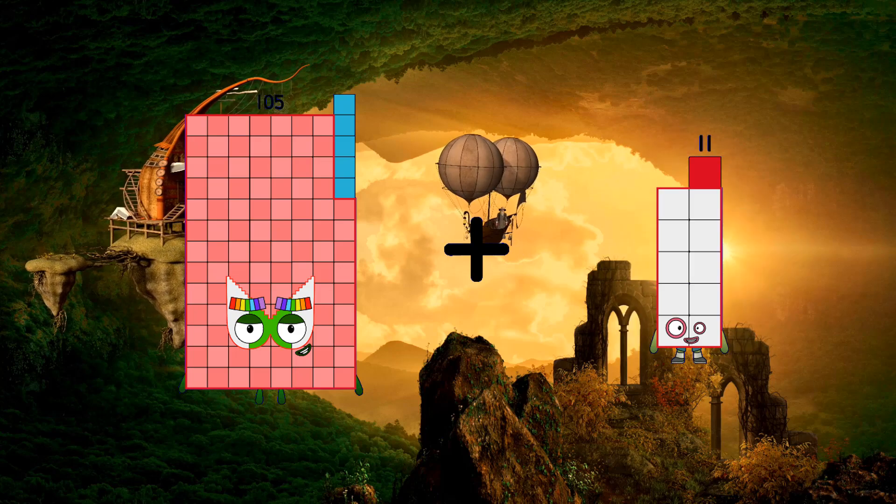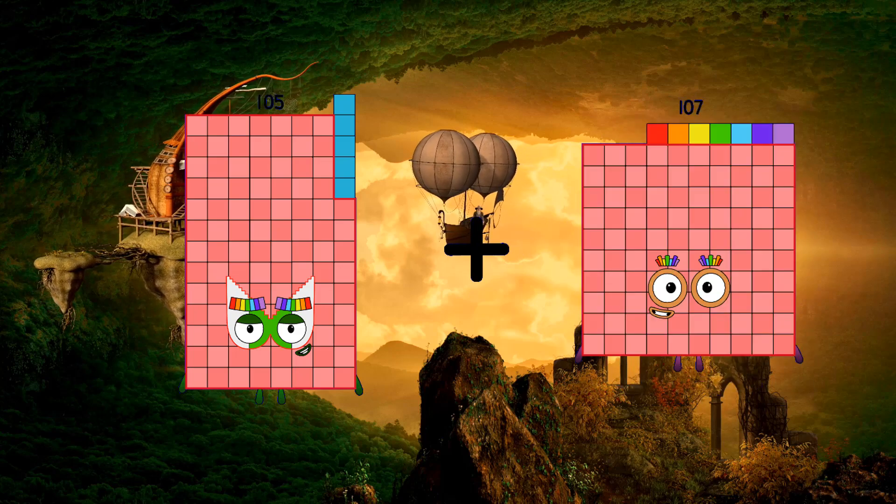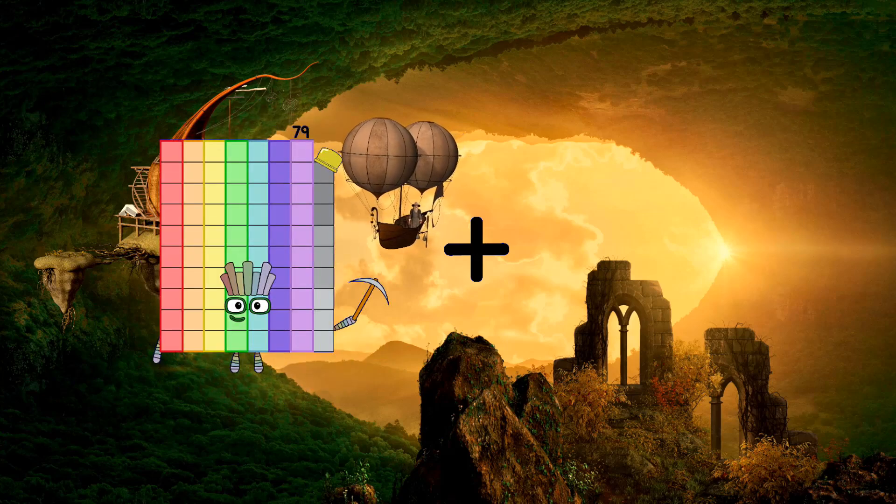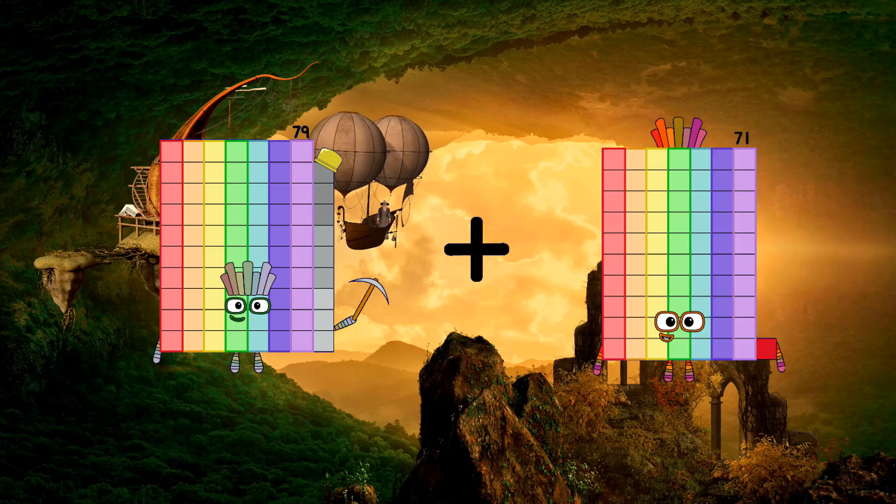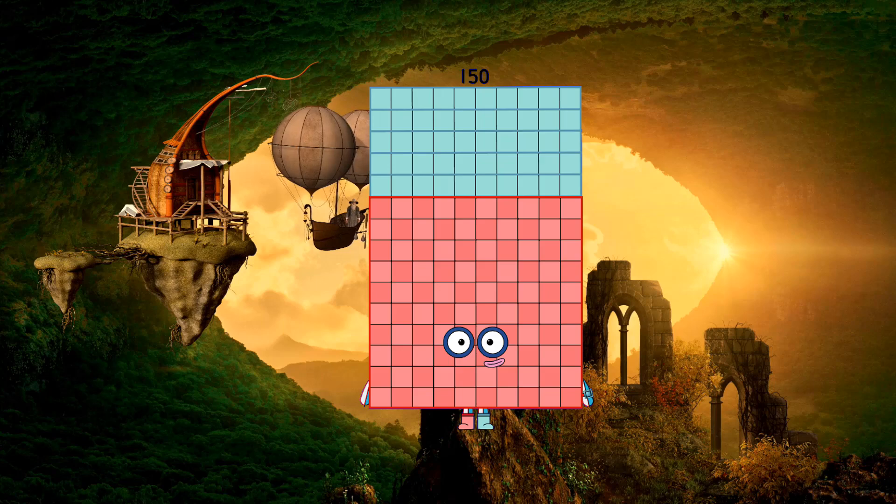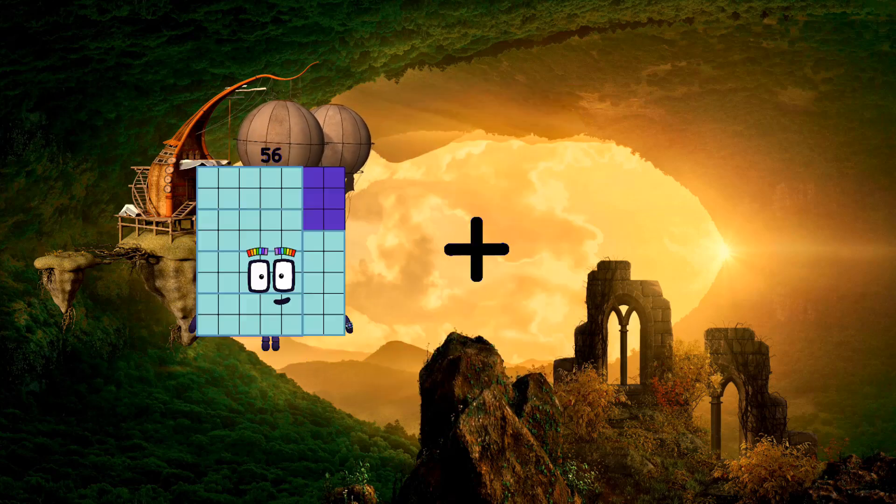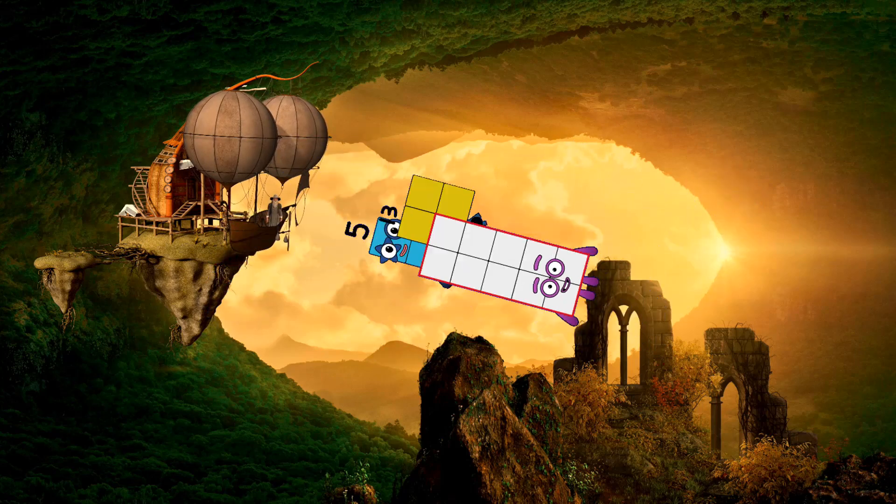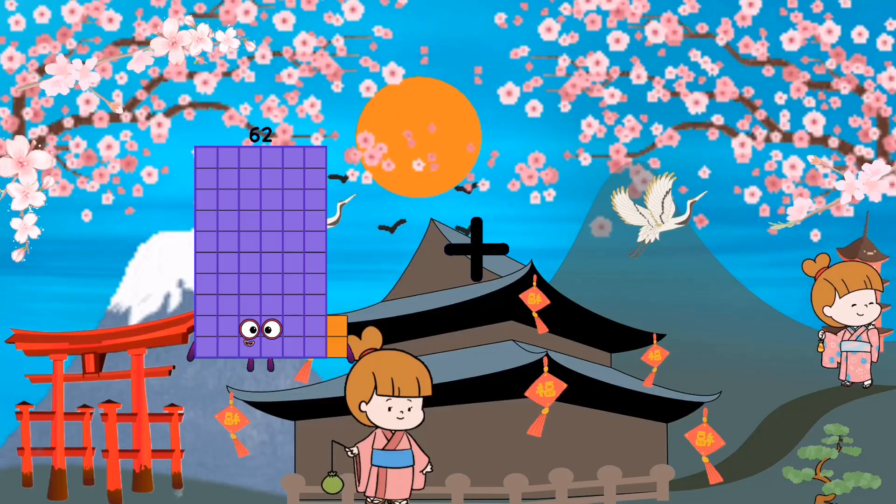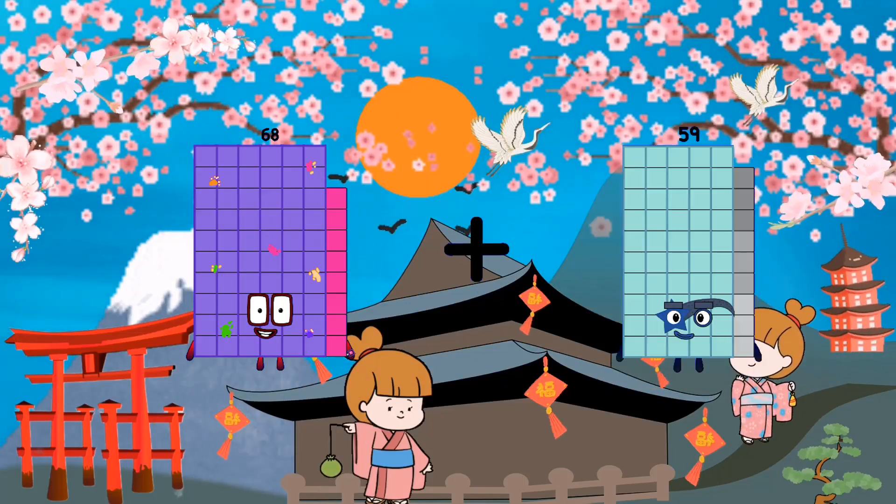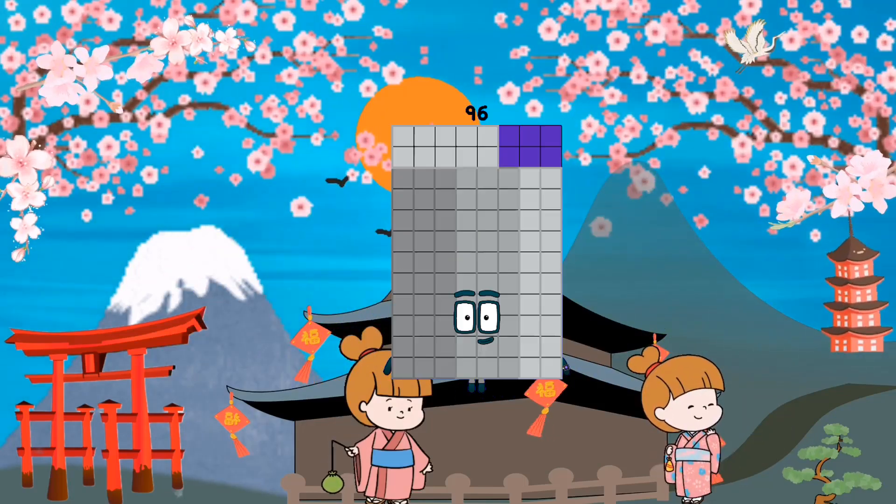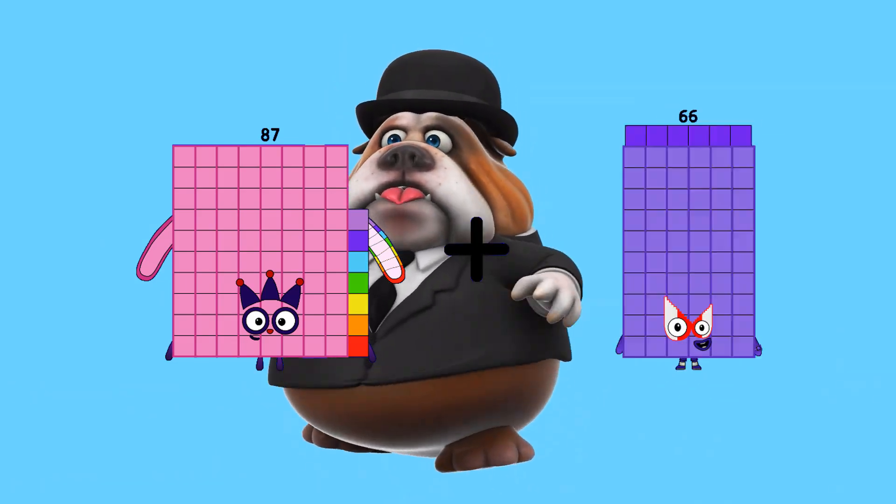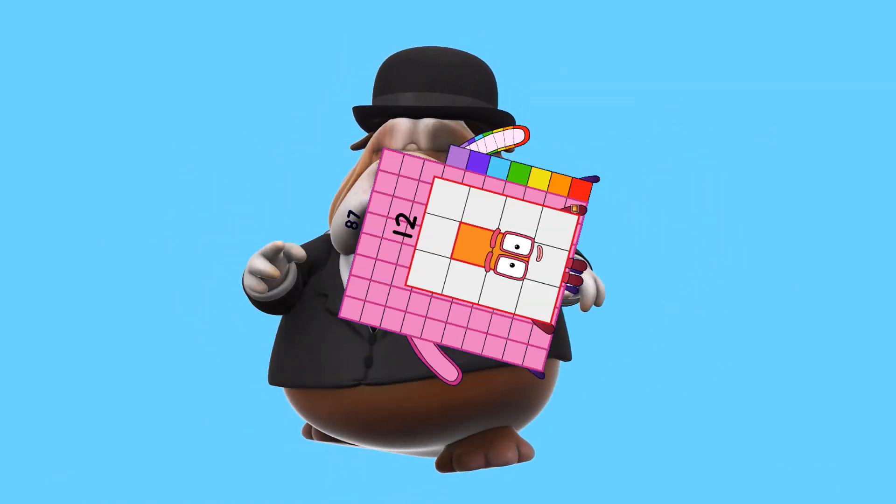105 plus 107 equals 212. 79 plus 71 equals 150. 5 plus 15 equals 18. 68 plus 28 equals 96. 87 plus 12 equals 99.